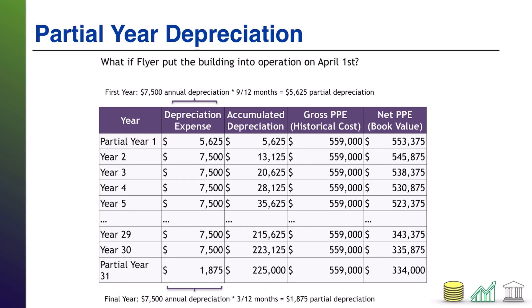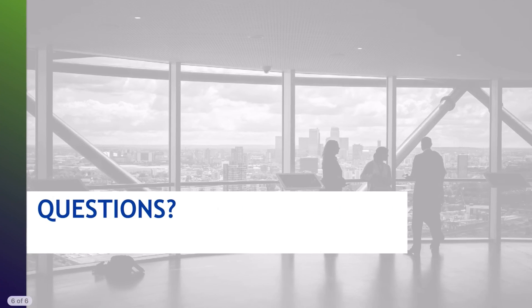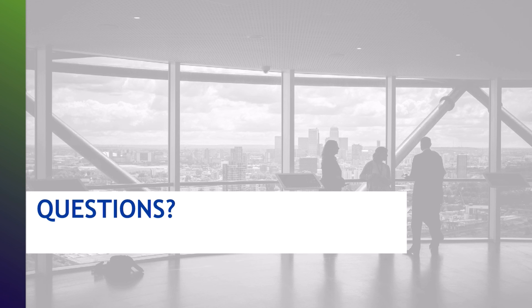So that's how you deal with partial year depreciation and how it differs from a financial statement perspective. Journal entries are still the same — debit depreciation expense, credit accumulated depreciation — just your first and last year might have a slightly different calculation because they're only partial years. That is it for straight line depreciation. It's the easiest and most common method of depreciation. Once you've got the formula down, it's just a rinse and repeat every time you see it. I hope you found this helpful and I hope you join me for another video.